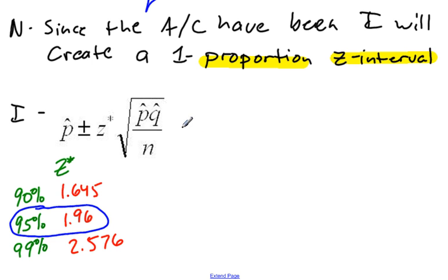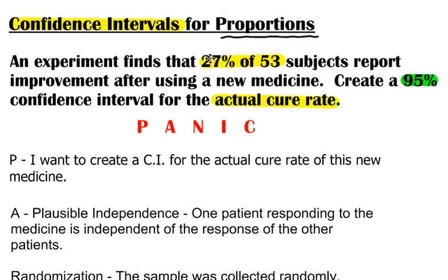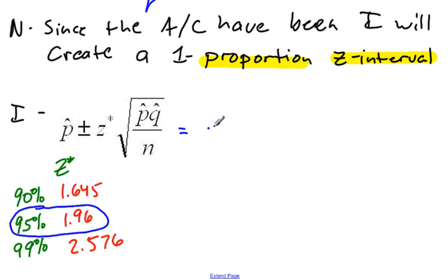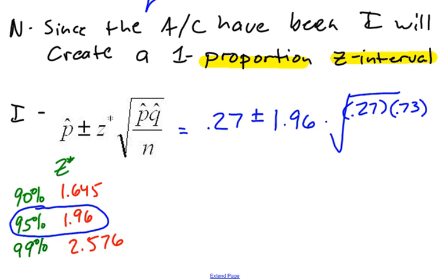So let me go ahead and plug everything into my equation. P hat is my sample proportion, and that is 27%. So 0.27 plus or minus my critical value, which is 1.96, times the square root of P hat times Q hat over n. P hat is 0.27, and Q hat, P plus Q always has to equal 1, so Q hat has to be 0.73. And I divide that by my sample size, and my sample size was 53.